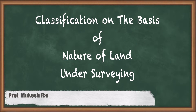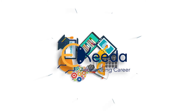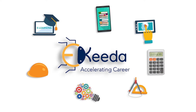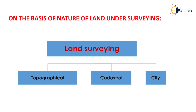Hello students, today we are going to study the classification on the basis of nature of land under surveying. This type of surveying is generally bifurcated into three parts: the first one is land surveying, the second one is marine or hydrographic surveying, and the last one is astronomical surveying. Now land surveying is further bifurcated into three parts: topographical surveying, cadastral surveying, and city surveying. We will see each type in detail.